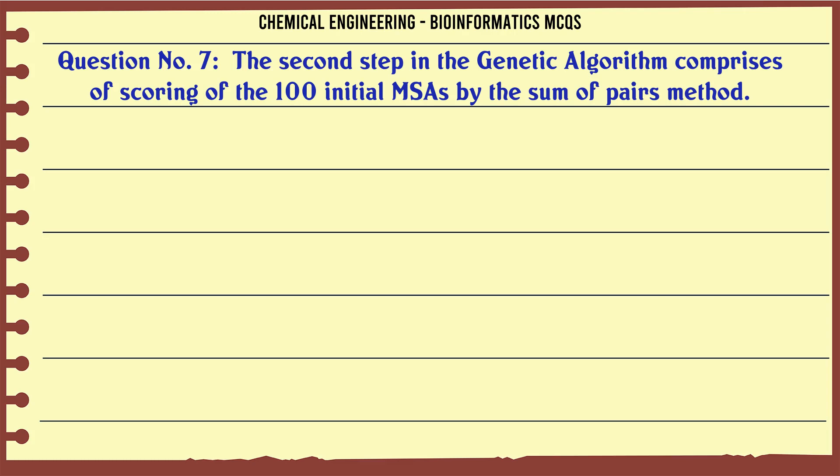The second step in the genetic algorithm comprises of scoring of the 100 initial MSAs by the sum of pairs method. A. True. B. False. The correct answer is: True.